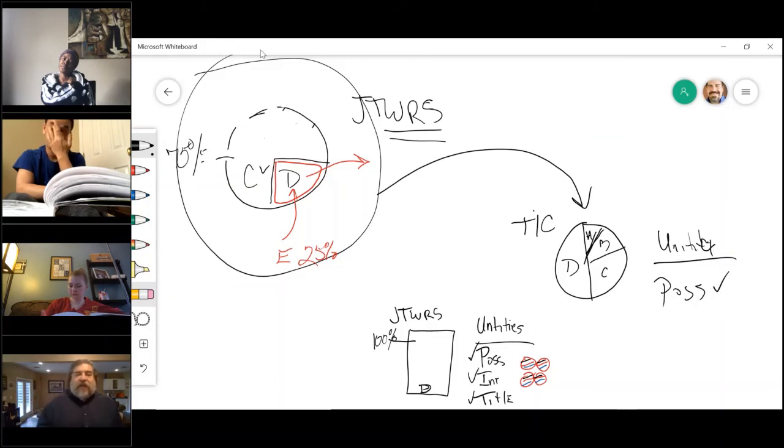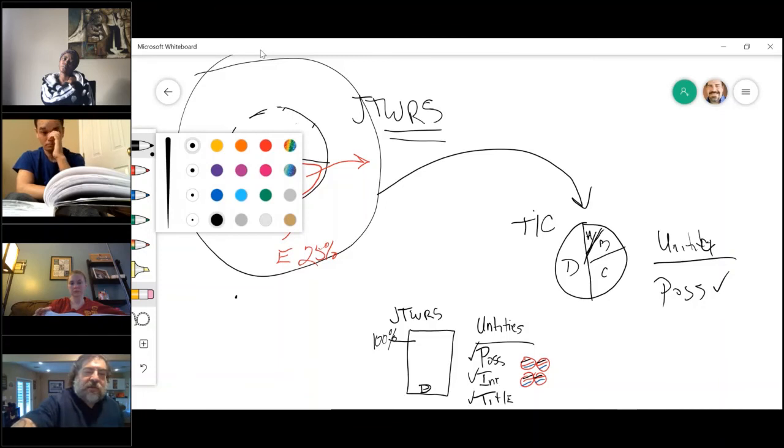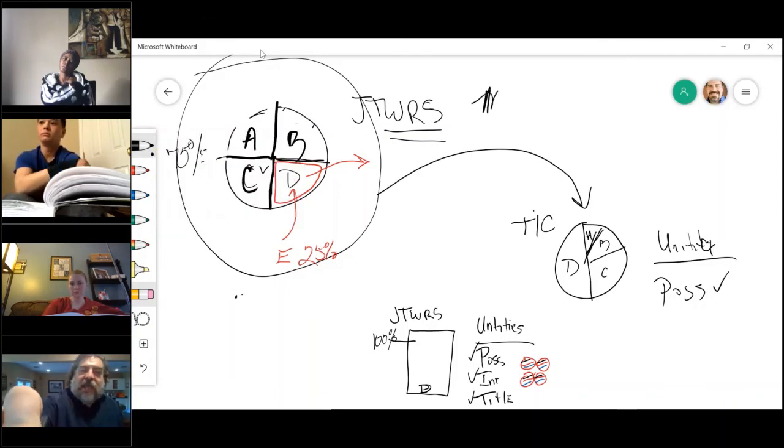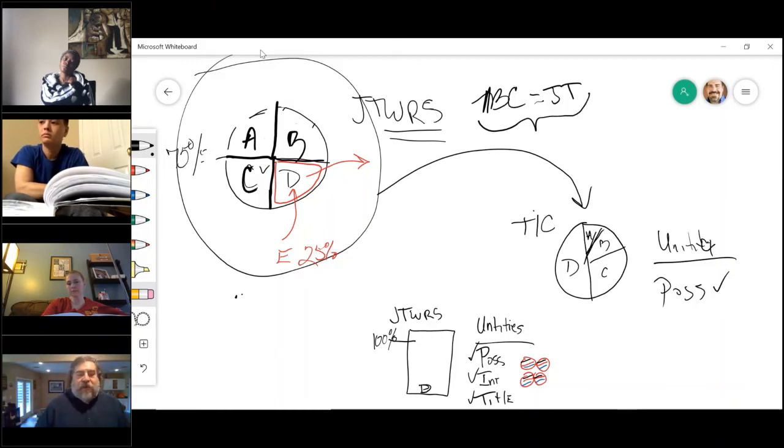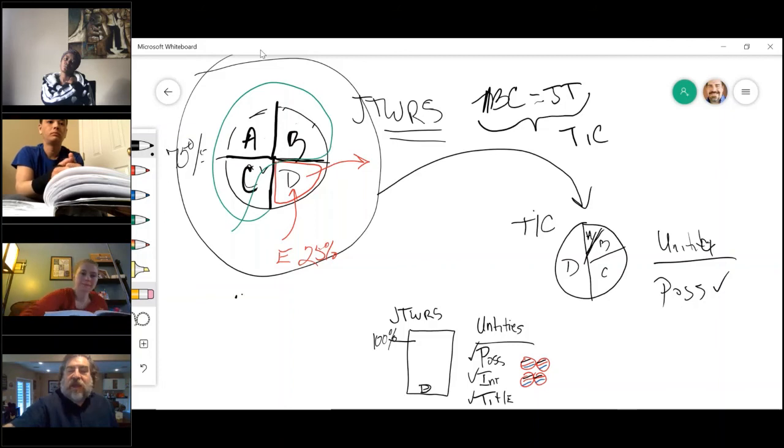So, what I'm telling you is this. A, B, and C operate as joint tenants. But together as a group, the three of them, are a tenant in common with the letter E. So, there's no way for E to join the joint tenancy?